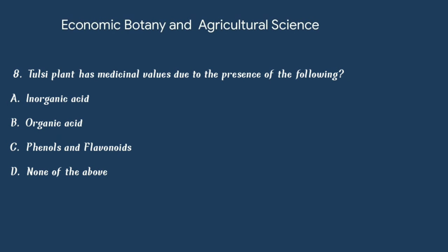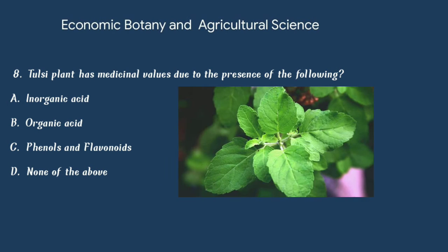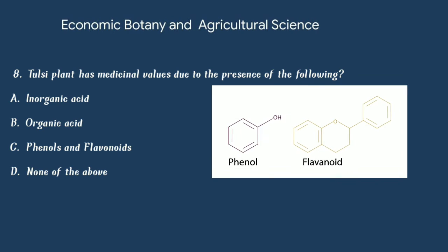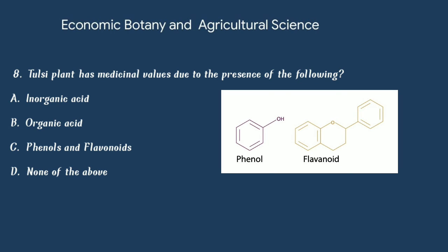Question number 8. Tulsi plant has medicinal values due to the presence of the following. Option A: Inorganic acid. Option B: Organic acid. Option C: Phenols and flavonoids. Or option D: None of the above. The answer is option C: Phenols and flavonoids.